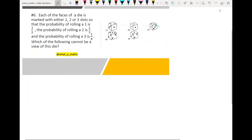Question number six. Each of the faces of a die is marked with either 1, 2, or 3 dots, so that the probability of rolling a 1 is half, the probability of rolling a 2 is 1 third, and the probability of rolling a 3 is 1 over 6. Which of the following cannot be a view of this die?